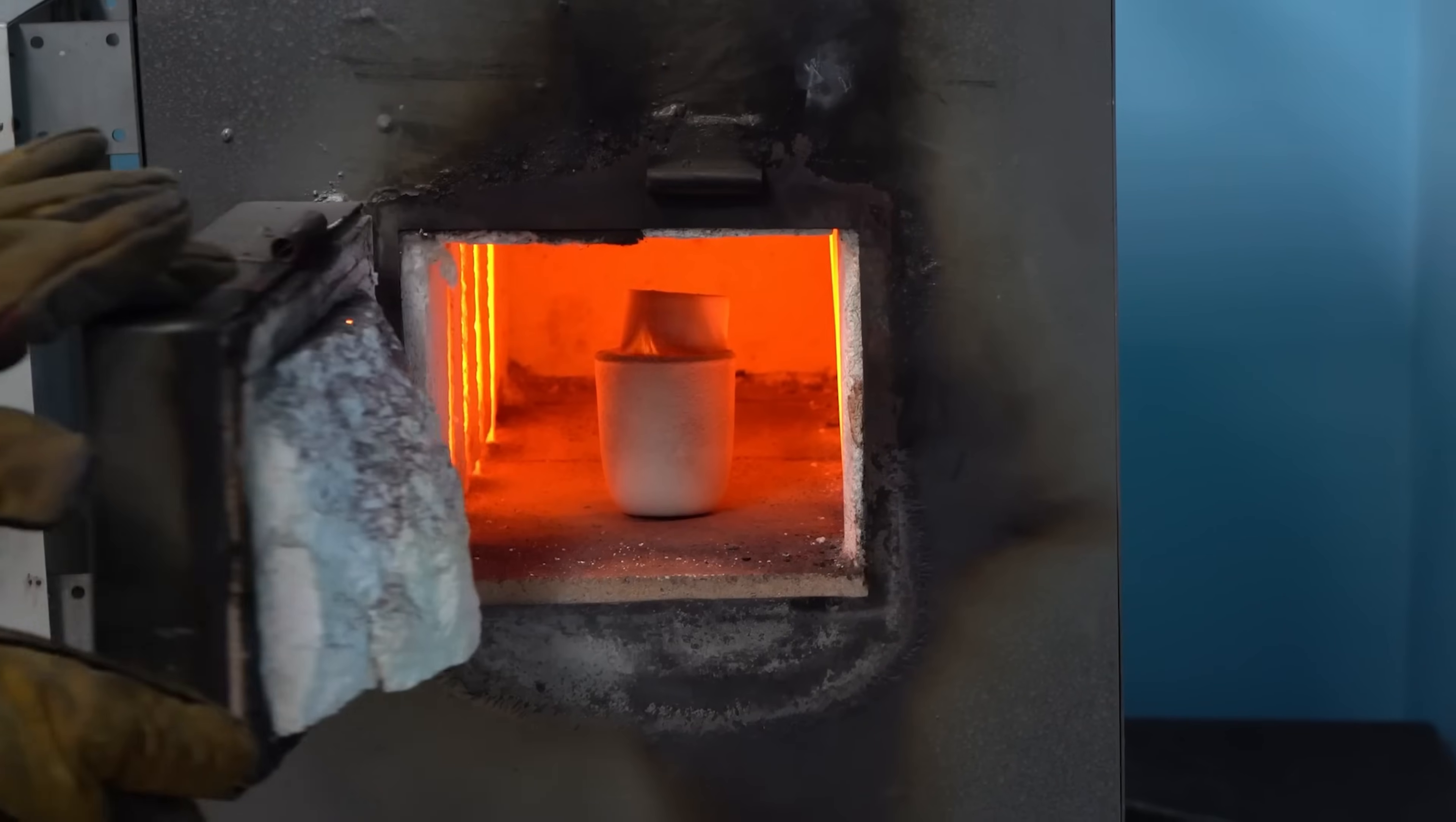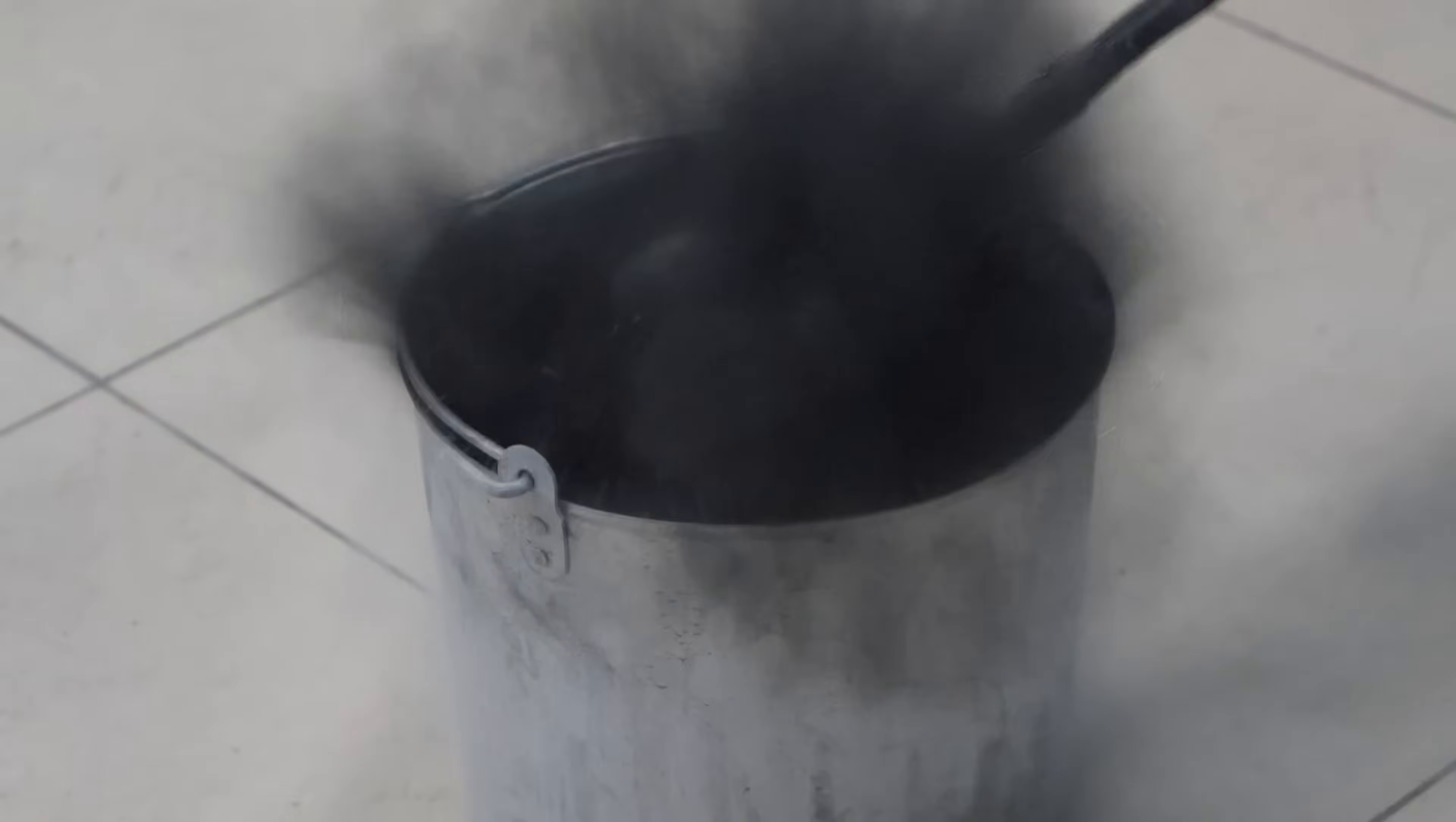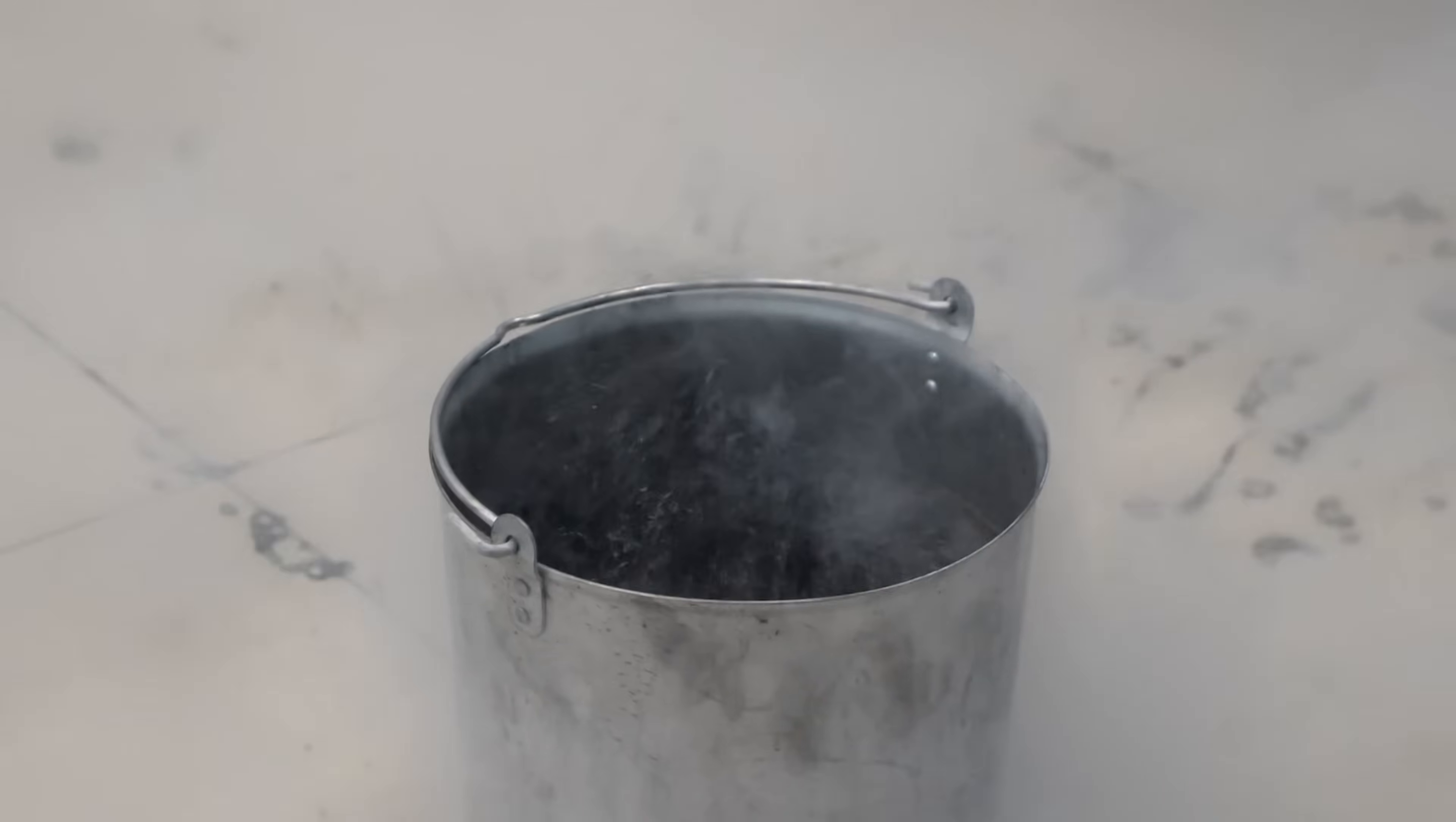After an hour of calcination, the crucible heated in the furnace should be cooled sharply in liquid nitrogen. This process looks quite spectacular. In this case, boiling nitrogen displaces oxygen from the container, creating a protective atmosphere, in which the red-hot iron doesn't oxidize.